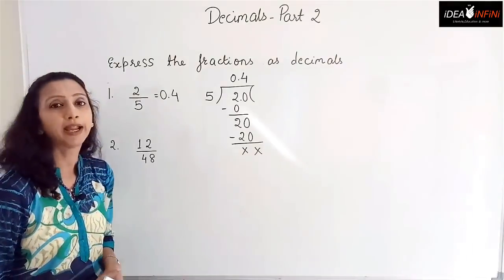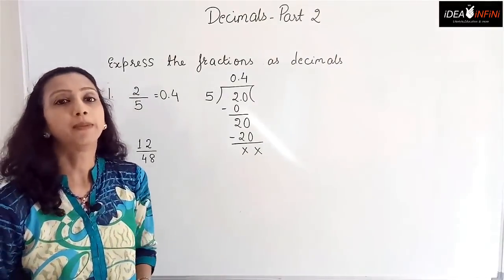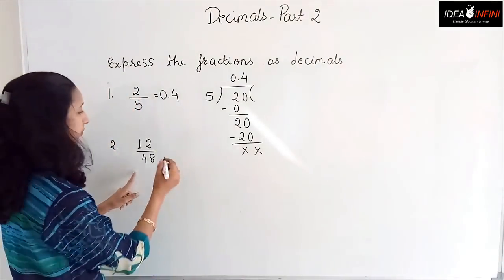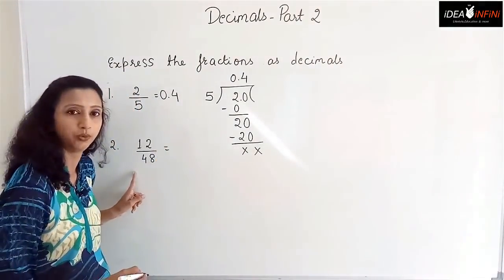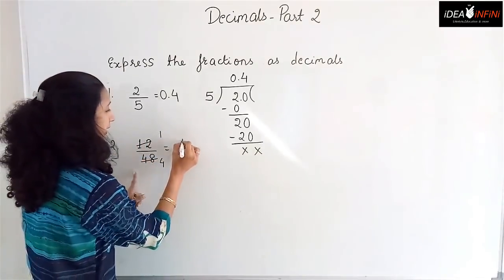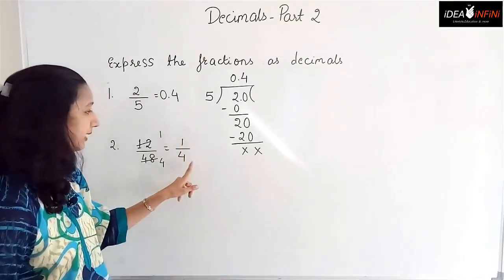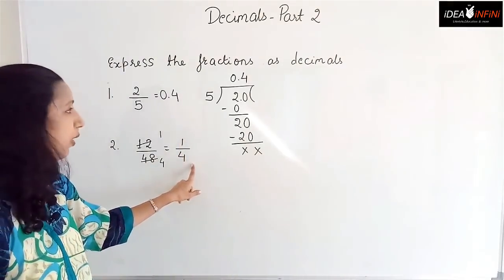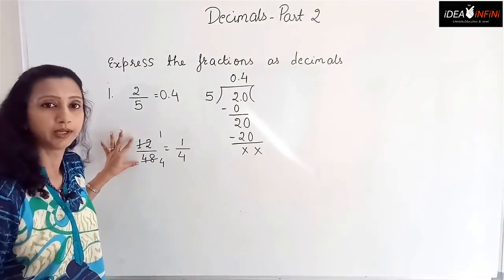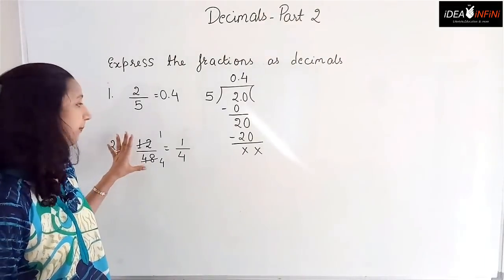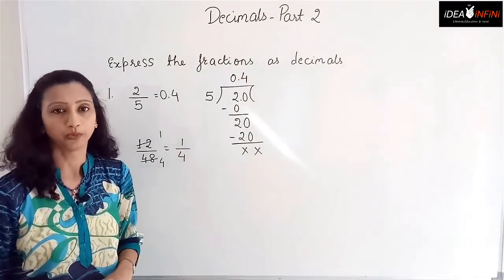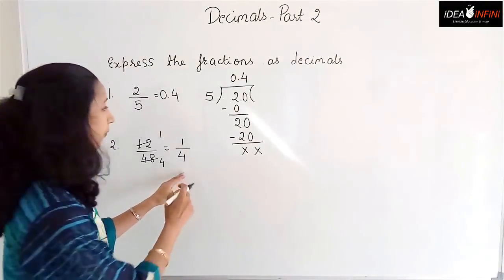Now for 12 by 48: first reduce to lowest terms. 12 fours are 48, so 12 by 48 simplifies to 1 by 4. It is easier to convert to lowest terms first before converting to decimal.